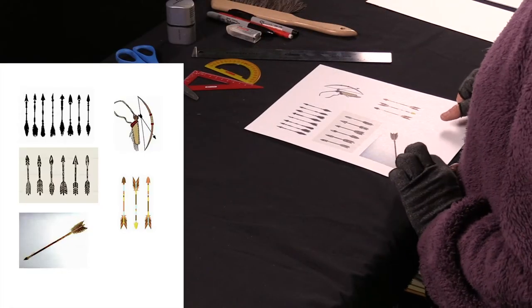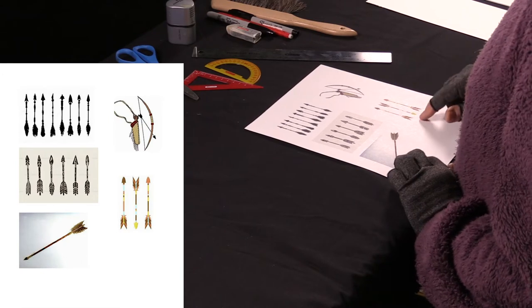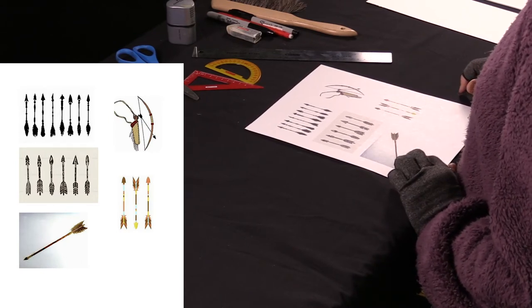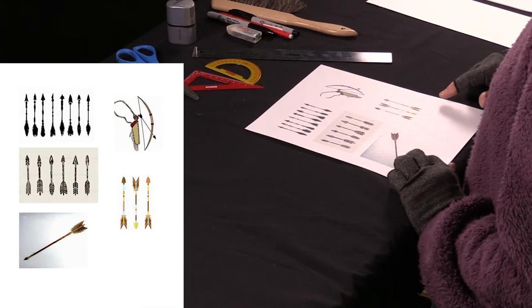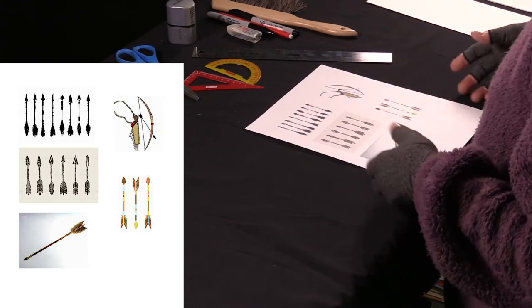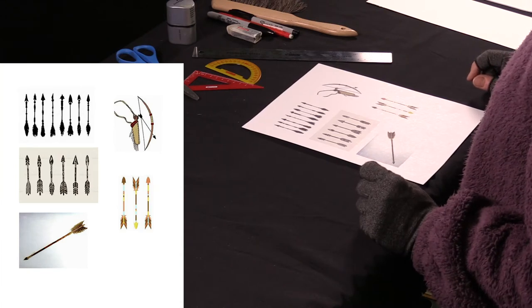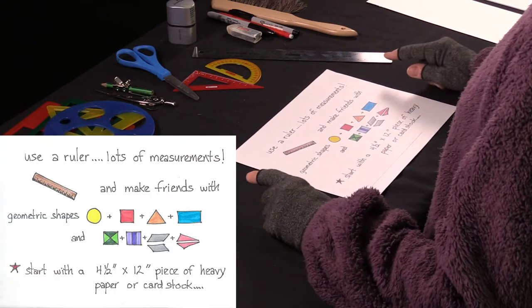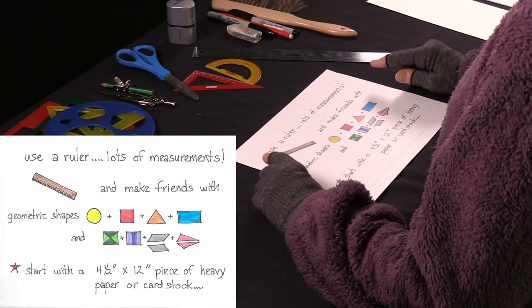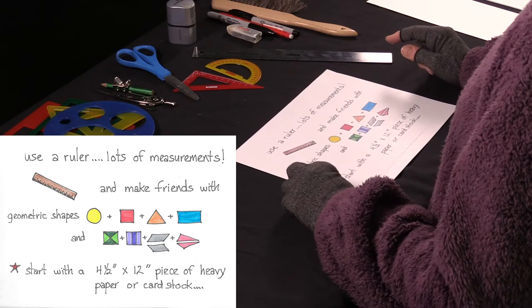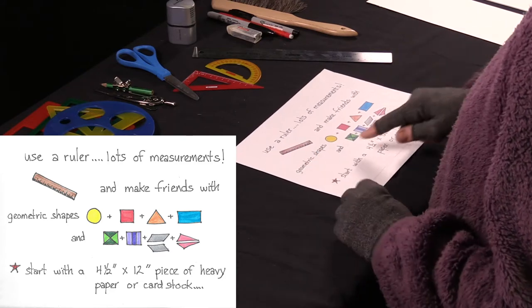Here's a picture. I just thought it might be nice to see. It might be a photocopy of all the different kinds of Native American arrows there are, and there's more than just this. These are just to give you some ideas. We are going to use a ruler and do lots of measurements. We're going to make friends with geometric shapes, like these.